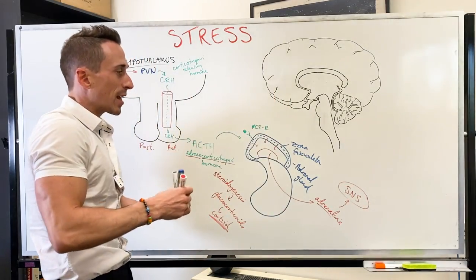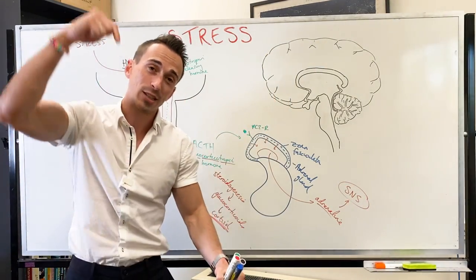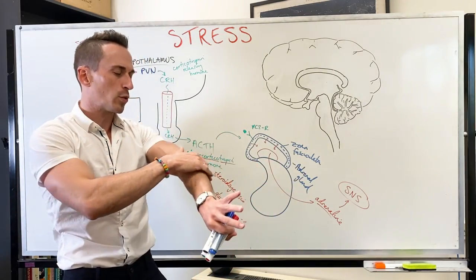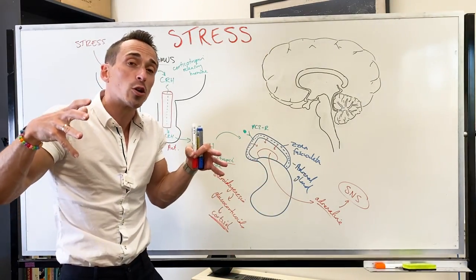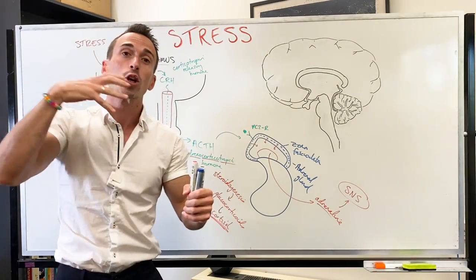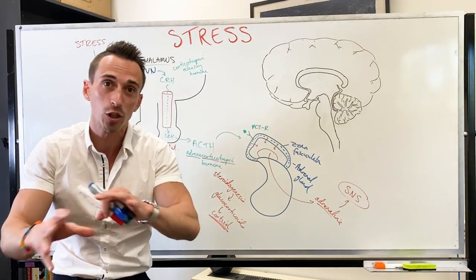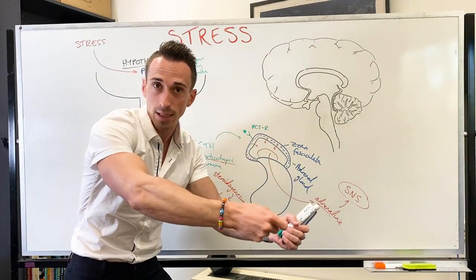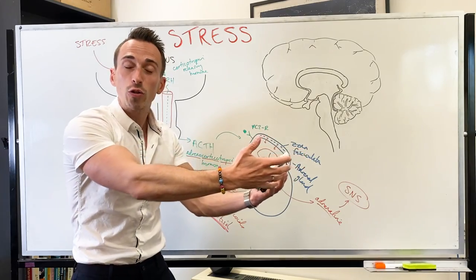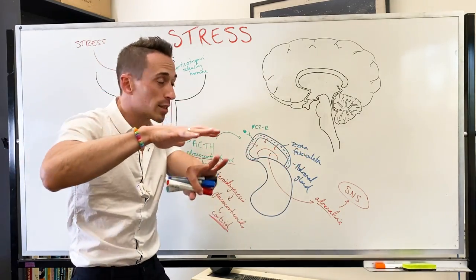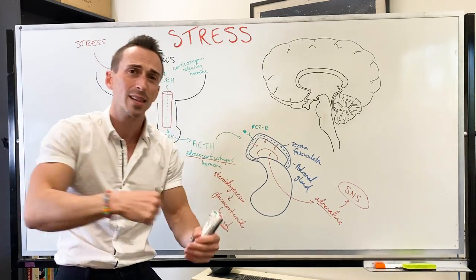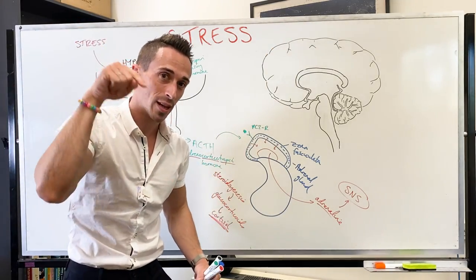Cortisol and adrenaline floating through the systemic circulation stimulate all these adrenergic receptors and you get a sympathetic nervous system response — a response to help you deal with that stress immediately. You get peripheral vasoconstriction — blood vessels in your skin constrict, shunting blood to deeper tissues like muscle so you can fight or run away. Your respiratory rate increases, more oxygen into the blood. Heart rate increases, blood pressure increases, delivering oxygen and nutrients to the tissues. Pupils dilate so you can see more around you. These are immediate effects.